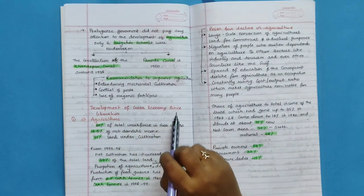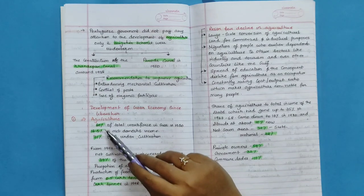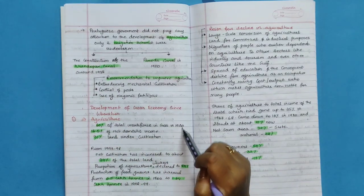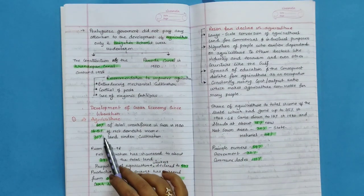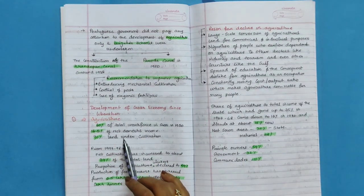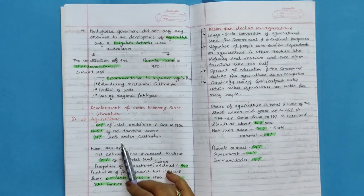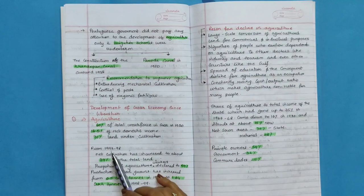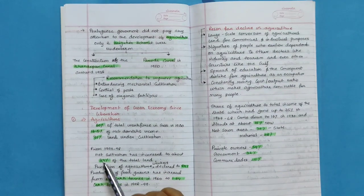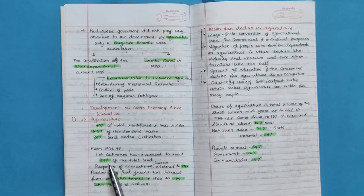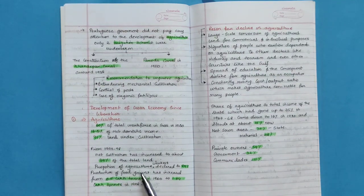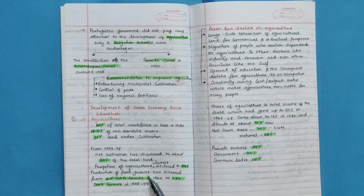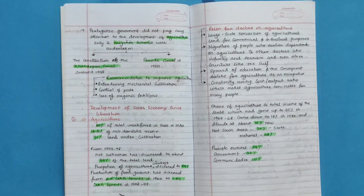Development of Goan economy since liberation. Agriculture. 60% of the total workforce in Goa in 1960 was from agriculture, 16.5% of net domestic income. 31% of land under cultivation. From 1997 to 1998, net cultivation has increased to about 39% of the total land. Proportion of agriculture workers declined to 24%. Production of food grains has increased from 0.5 lakh tons in 1960 to 1.64 lakh tons in 1998 to 1999.